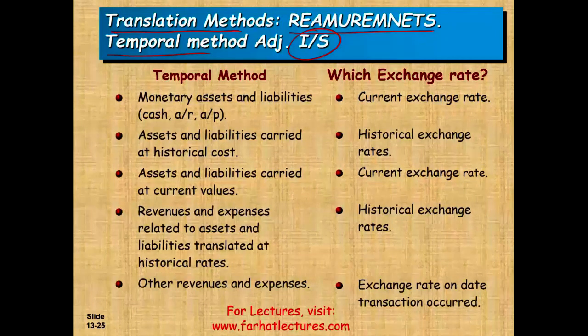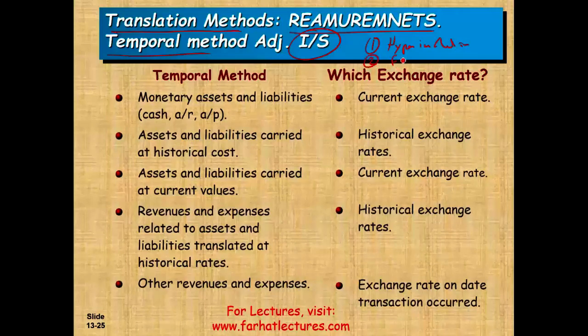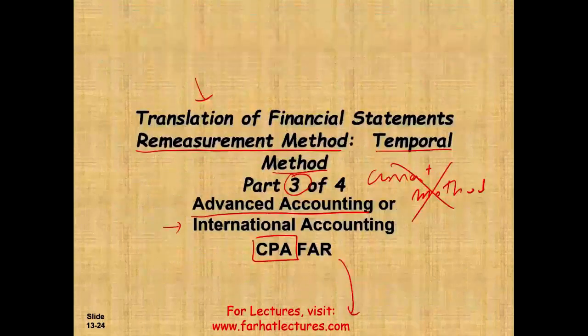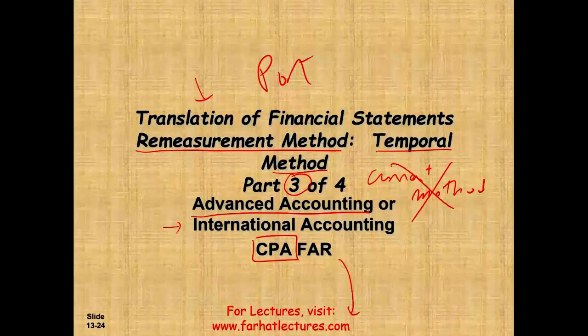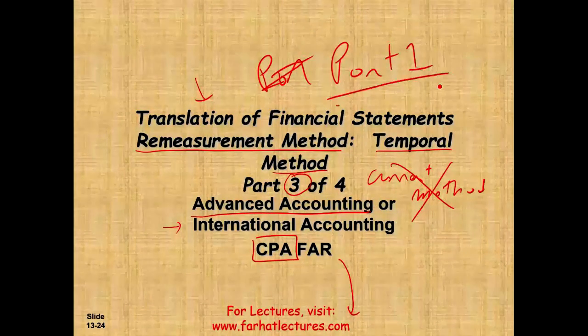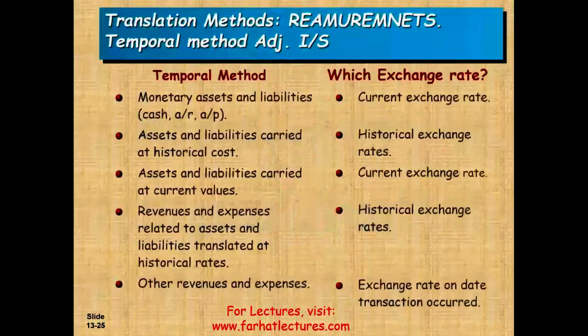Why are we using the temporal method? There are two reasons. One reason is the economy is hyperinflationary — that's when we use the temporal method. The other is when the functional currency equals the US dollar. In our Swiss example, we assume the Swiss company uses the US dollar as their functional currency. If you don't know what functional currency is, go watch part one, as it takes 10 to 15 minutes to explain.